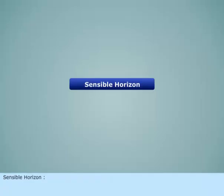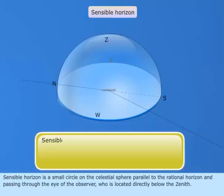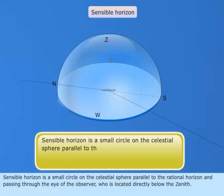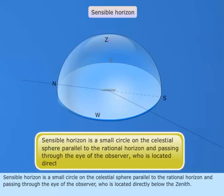Sensible Horizon is a small circle on the celestial sphere parallel to the rational horizon and passing through the eye of the observer, who is located directly below the zenith.